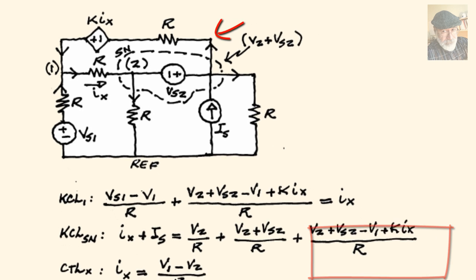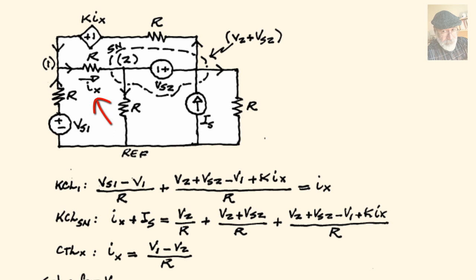And last, the CTL equation for the control variable IX. That current is the current in an R branch. V1 minus V2 over R. Three equations, three unknowns: V1, V2, and IX.